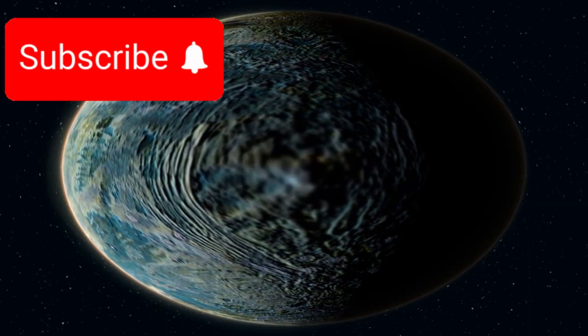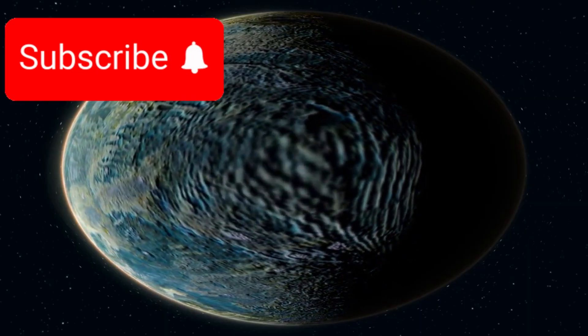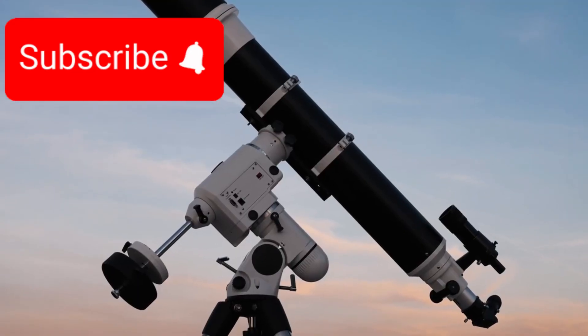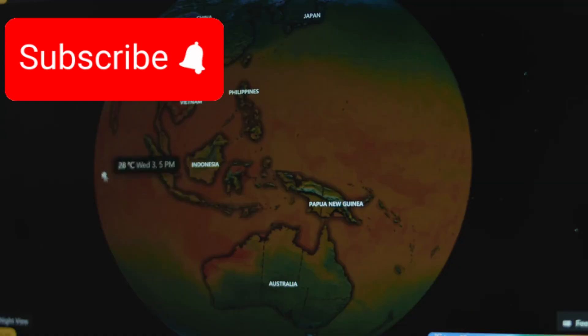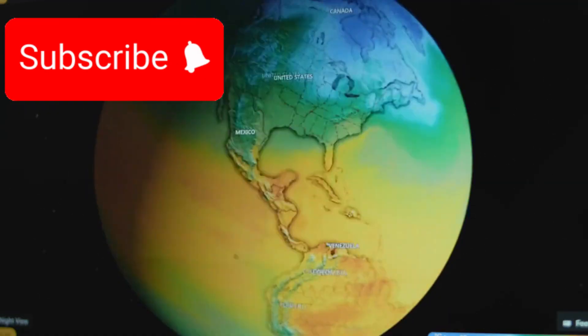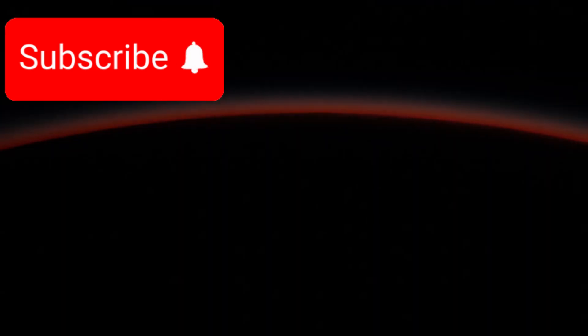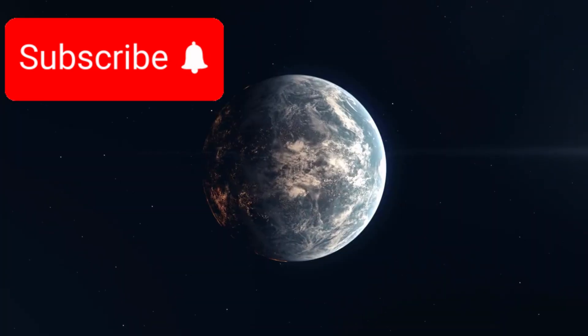Even more exciting is the possibility of direct imaging of exoplanets. Future telescopes might one day reveal surface details—oceans, continents, weather systems, or even seasonal changes. These views could tell us not only if a planet is habitable but whether it is inhabited.